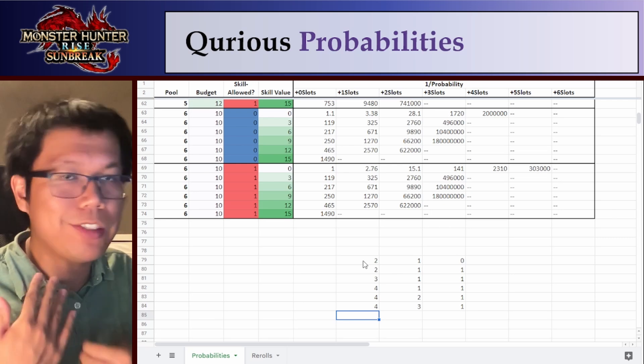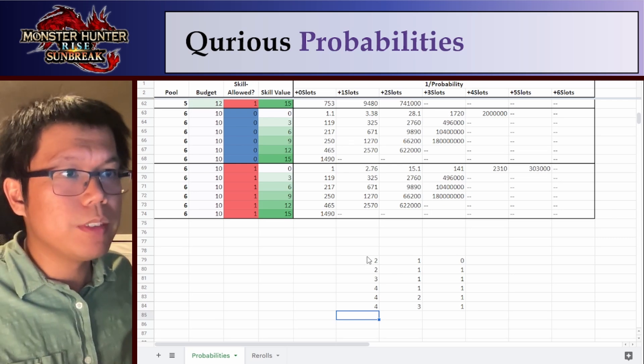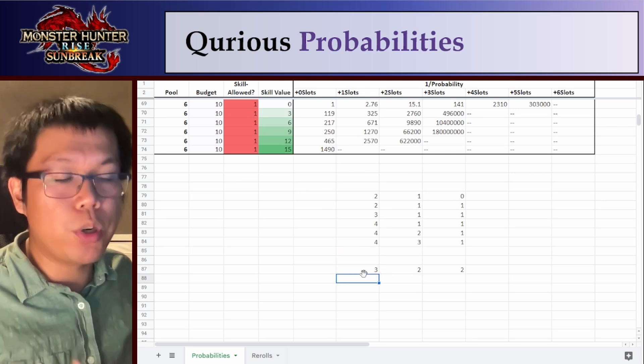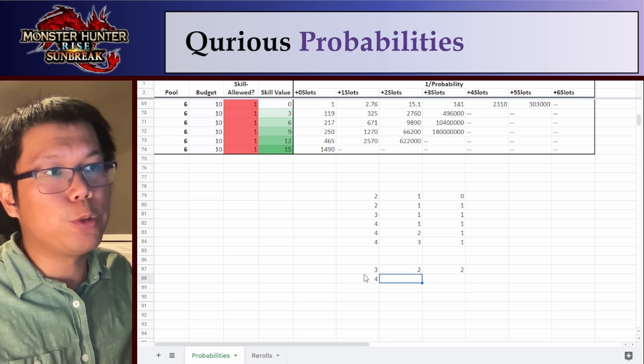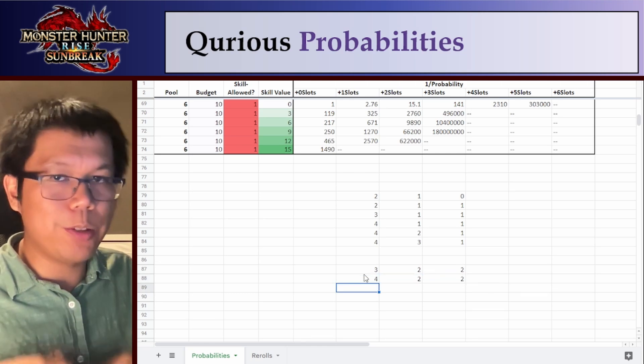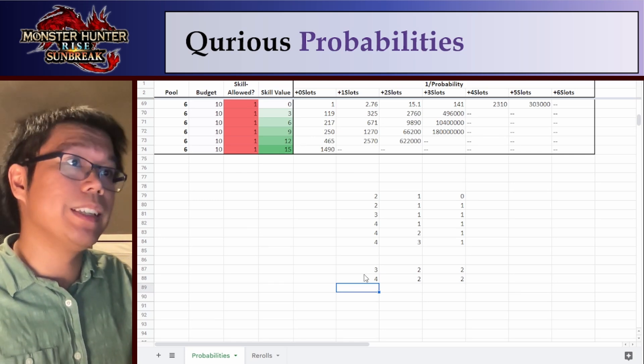So this is why I'm saying that like the archfiend armor legs, because that has three to two, it's going to start from three to two. So because they already have a point, it's going to fill up the first one first and get it to four to two. And of course, the four slot is very, very valuable because we can use, for example, a crit element plus or a quicksheath plus for a longsword user.